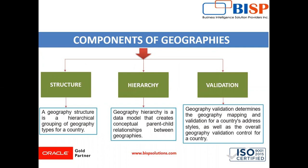A structure is a hierarchical grouping of geography type for a country. A hierarchy is the data model that creates a conceptual parent-child relationship between the geographics, and validation determines the geography mapping and validation for a country's address style as well as the overall geographical validation control for a country. We will understand each term one by one and see how geography is managed in the Oracle Fusion application.